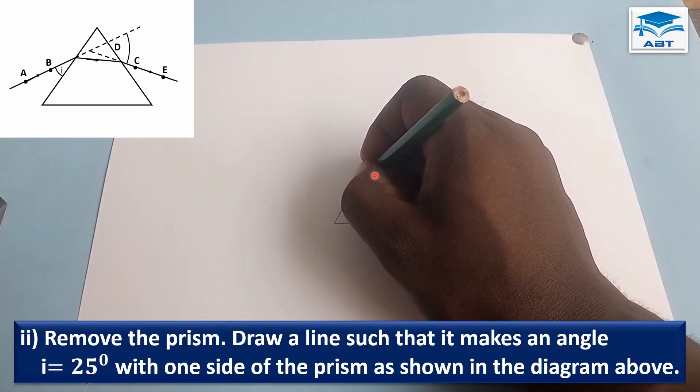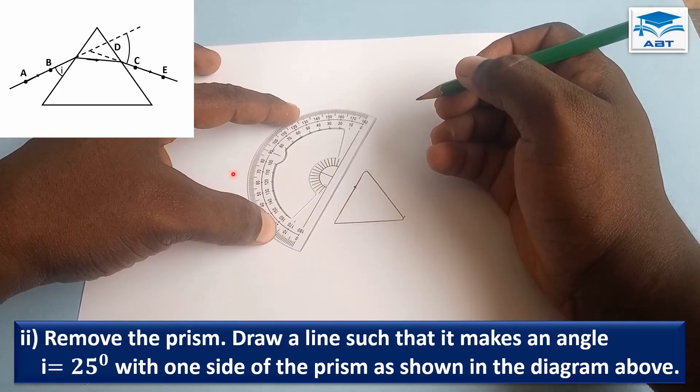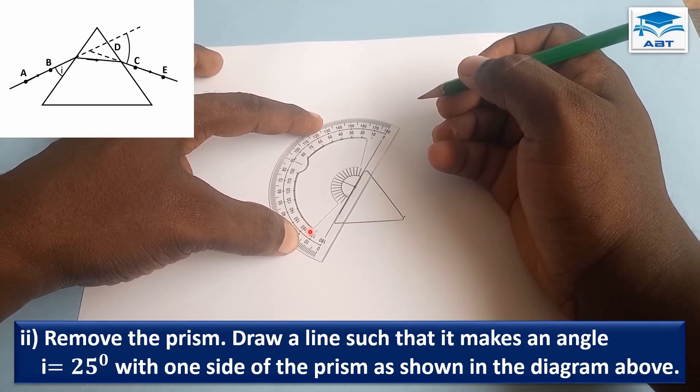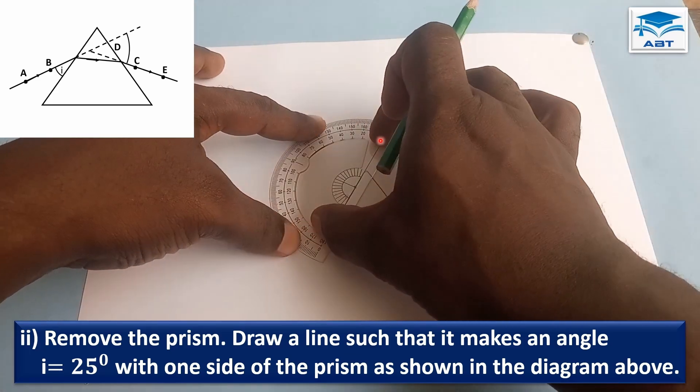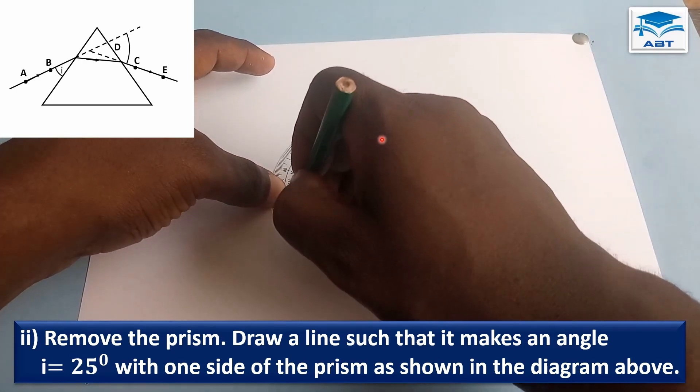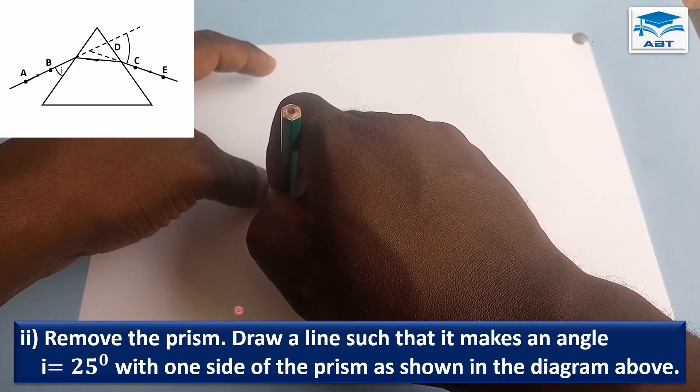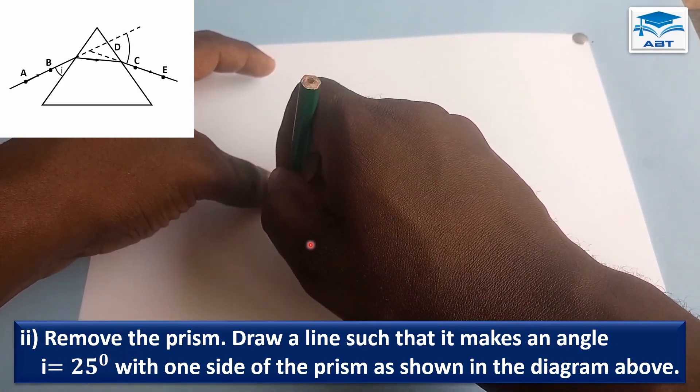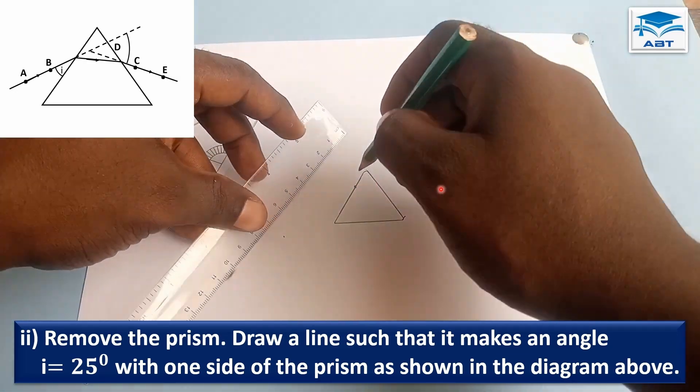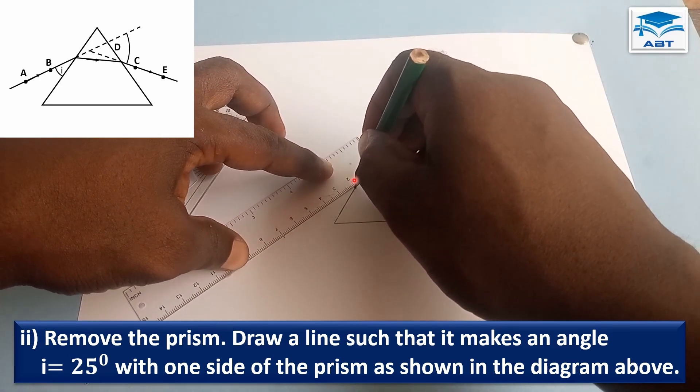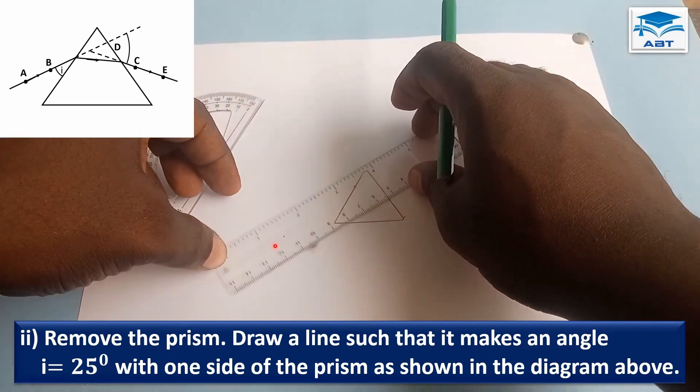So we make a point here and we are going to use this diagram as a guide to perform the experiment. We put the protractor on the outline such that this line falls on the outline and we measure i equals 25 degrees. And we draw a straight line passing through the point of incidence and that point.